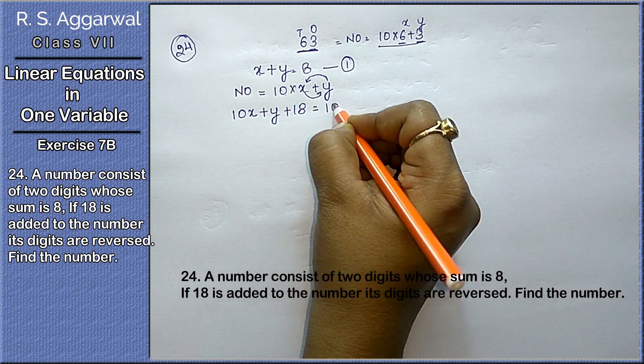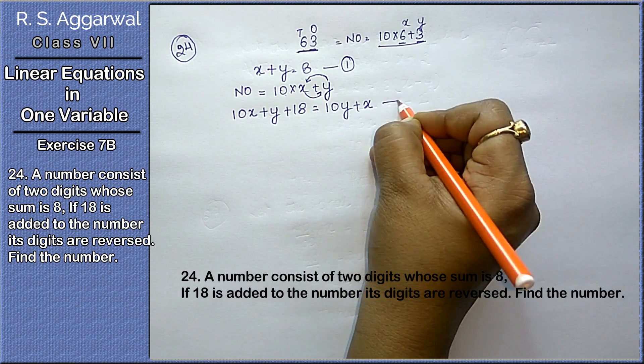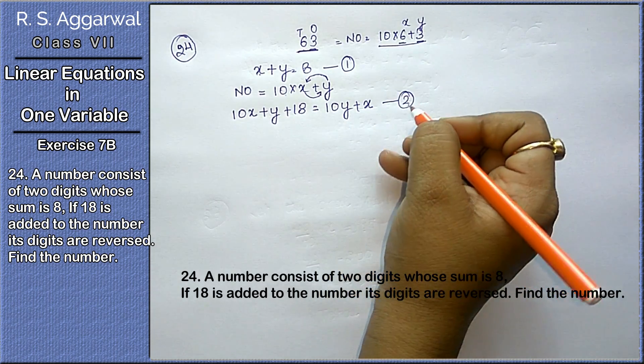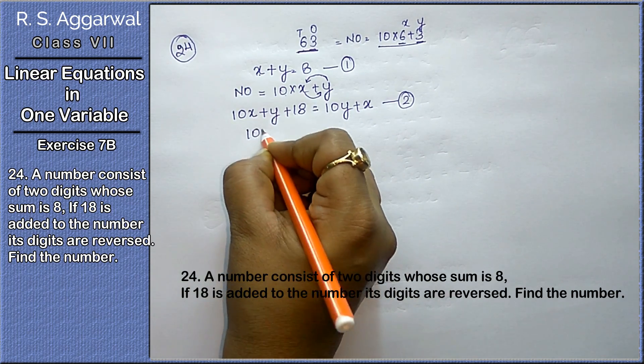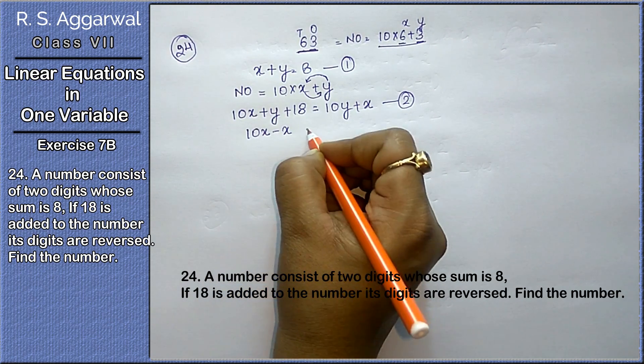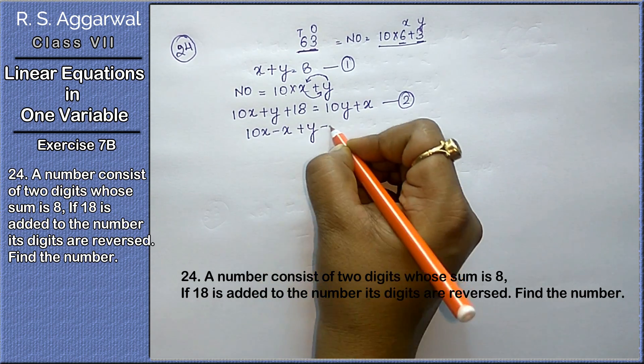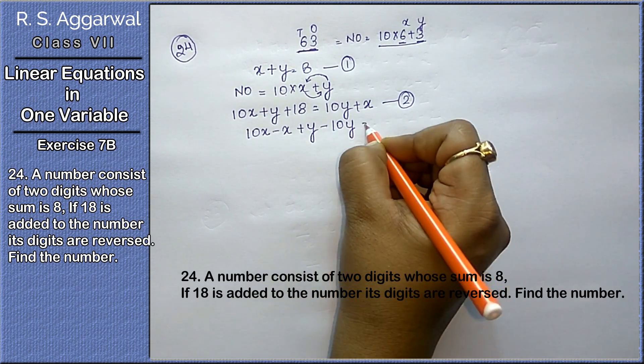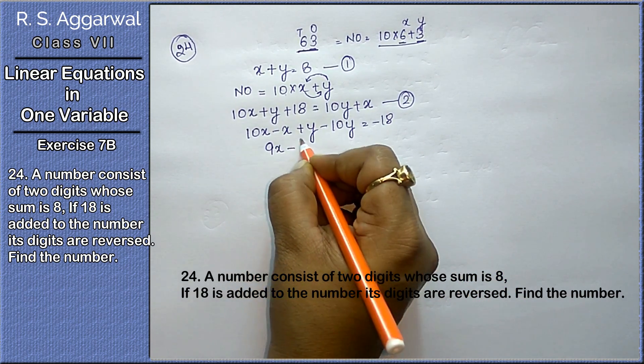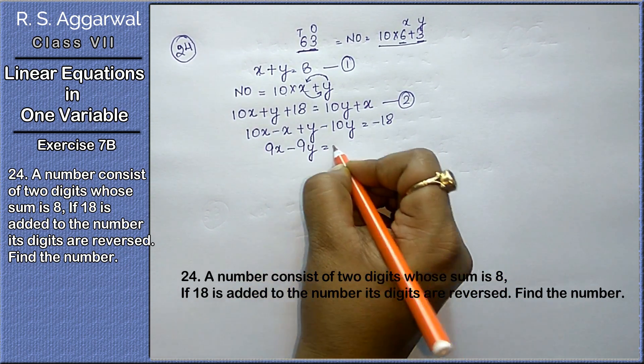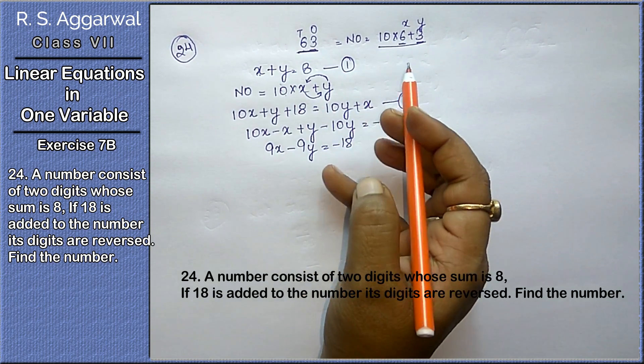Reversed means y will go with 10 and x will go here. So the digit becomes 10y plus x. This is our second equation. First equation is here. We'll rearrange the terms: 10x minus x minus plus y minus 10y equals to minus 18.